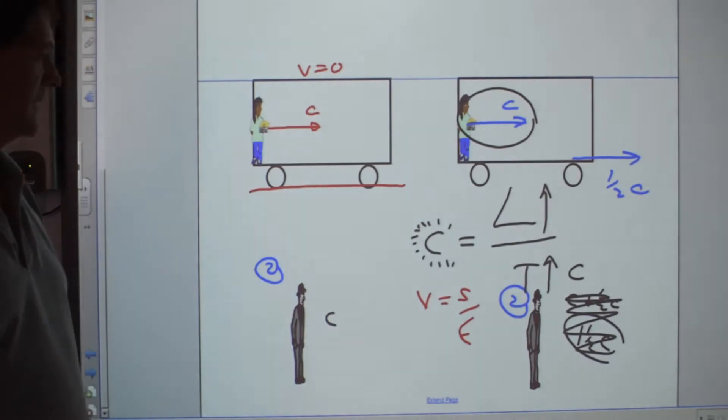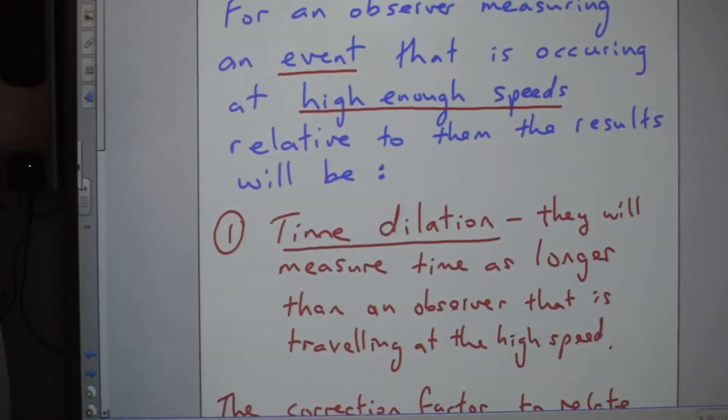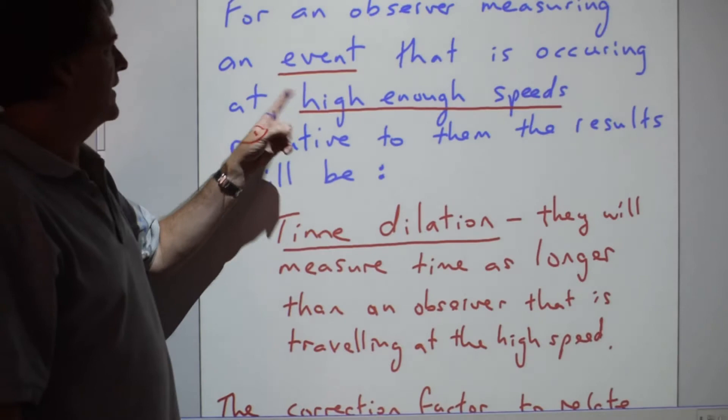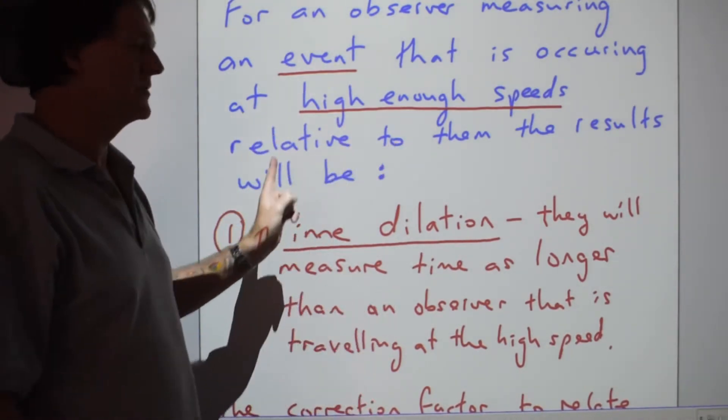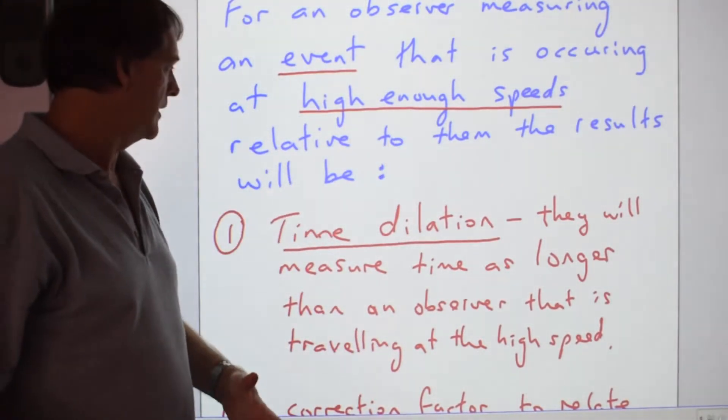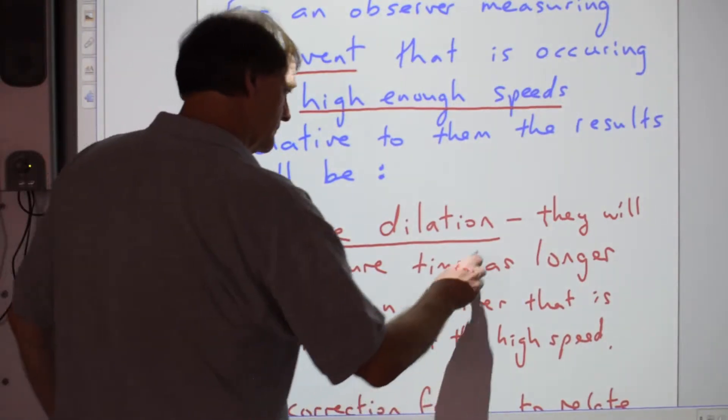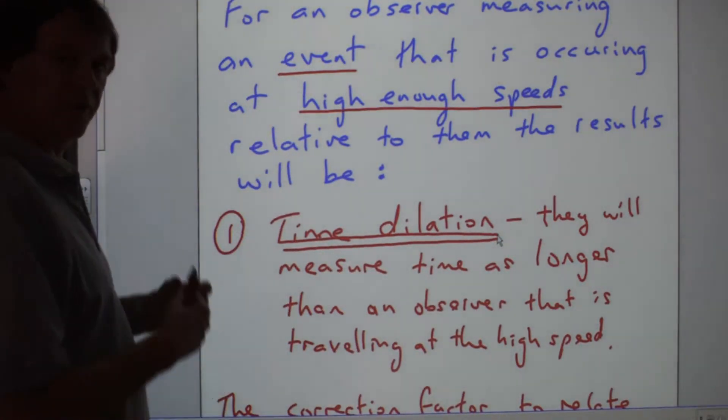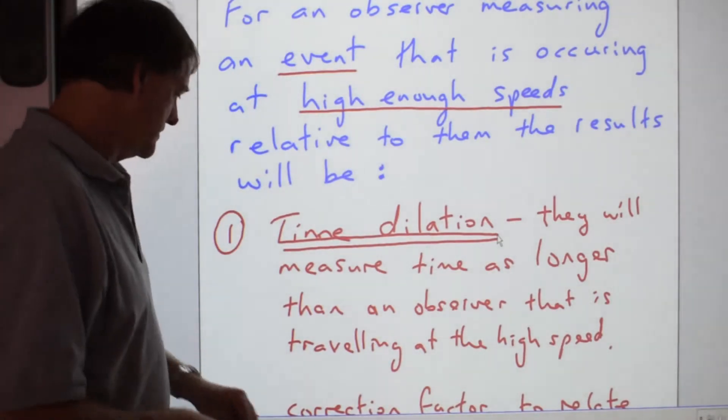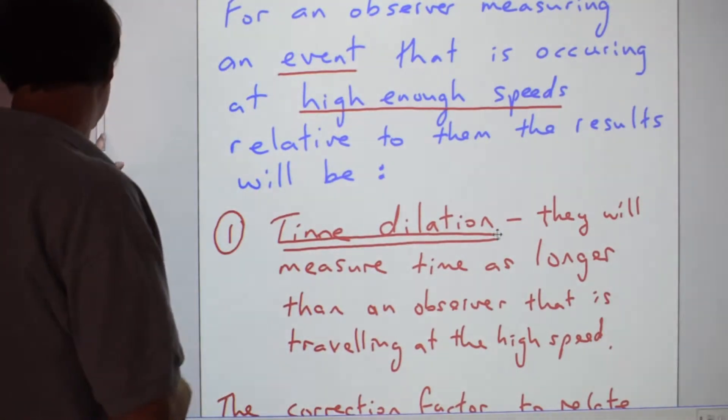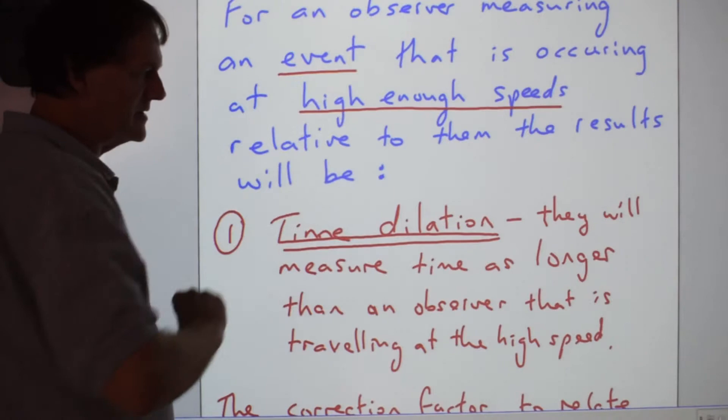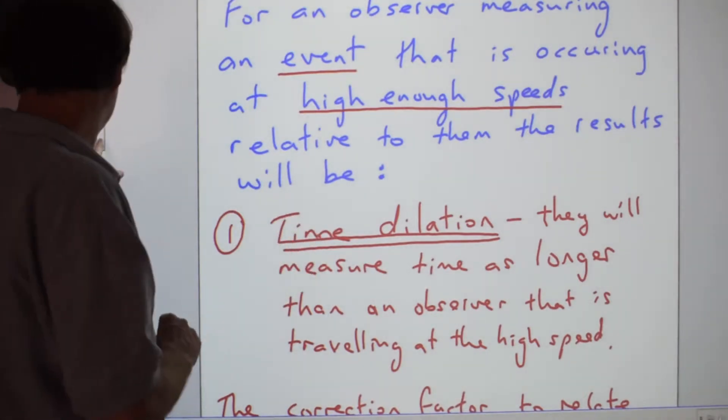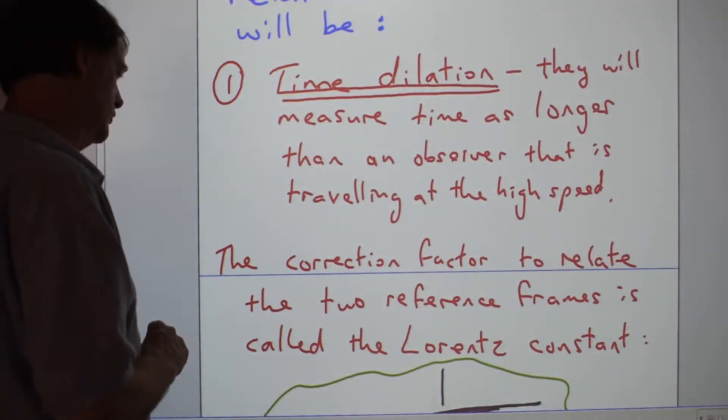For an observer measuring an event that is occurring at high enough speeds relative to them, the non-moving observer, they're going to get time dilation. Time is going to stretch out and go longer than the one that's on the travelling object. The correction factor that's actually been worked out for that different missing piece there for the extra length that it's travelling is the Lorentz factor.